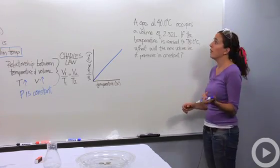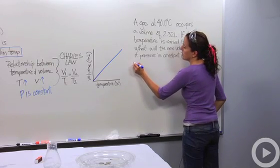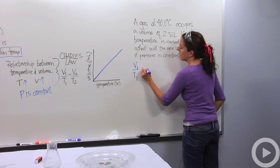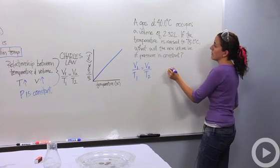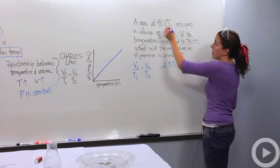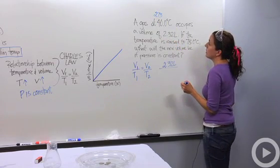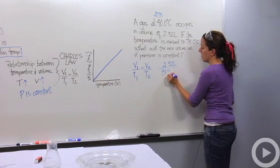So knowing that my formula is V1 over T1 equals V2 over T2, the first volume that we're going to deal with is 2.32 liters. The first temperature is 40 degrees Celsius. We add 273 to that, and we get 313 Kelvin.